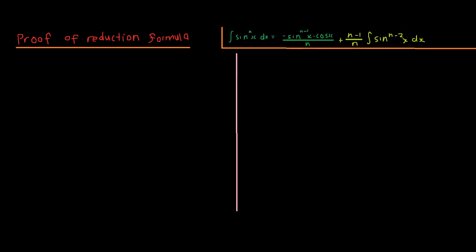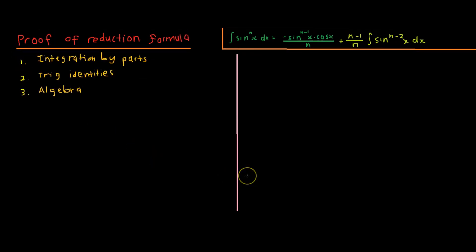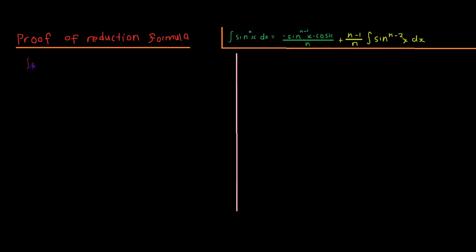In this video we're going to be talking about the proof of the reduction formula of the integral of sine of x to the power of n. This proof generally contains three different components: algebraic manipulation, integration by parts, and trig identities — though algebra and trig identities are applied throughout the entire process.